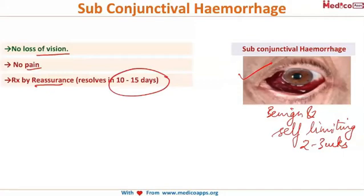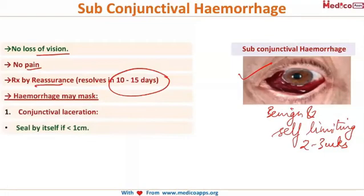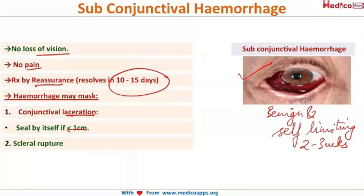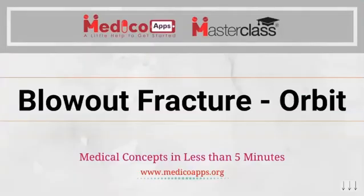Vision will be absolutely normal and it is going to heal on its own within two to three weeks. However, keep in mind that the hemorrhage might sometimes mask a conjunctival laceration — if the laceration is less than one centimeter it will heal by itself — and sometimes it can even mask a more serious condition called scleral rupture.